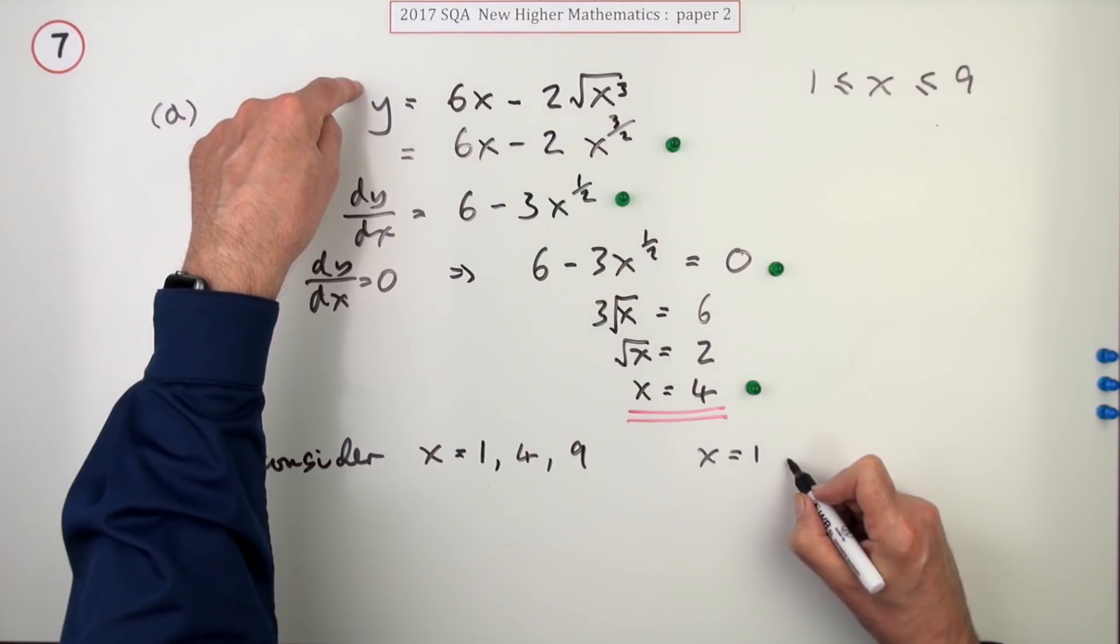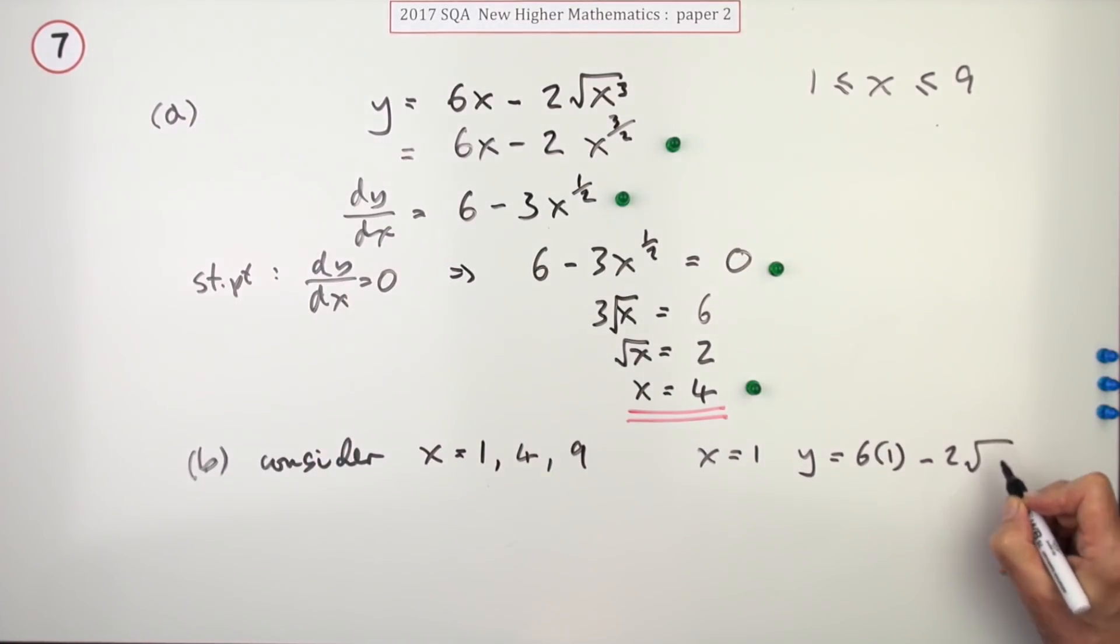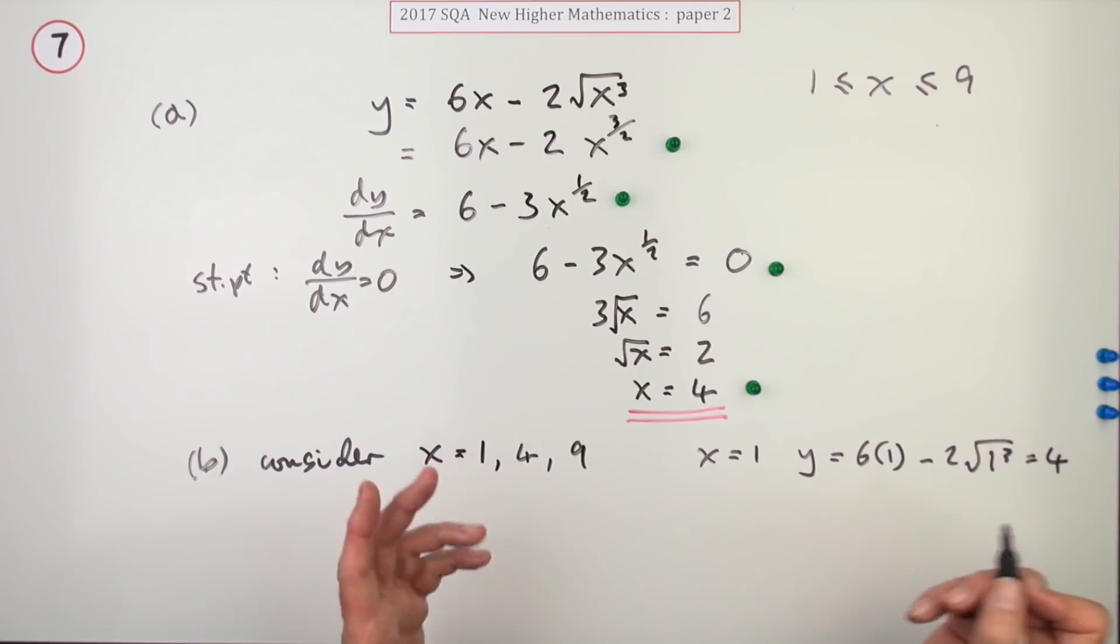x is one into this. If x is one, y will be 6 times 1 minus 2 times the square root of one cubed. That's just a one, so that's 6 minus 2, so that's 4. That tells me nothing so far, that could be the biggest, it could be the smallest, it might not be anything.